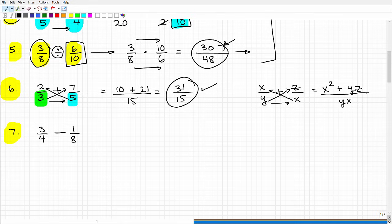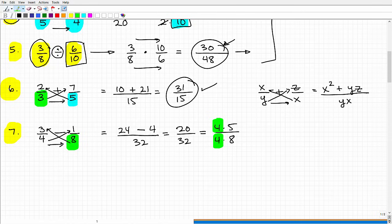Let's do this last problem here. We're using the exact same method. Starting with this bottom number, we go this way. 8 times 3 is 24. Because this is a subtraction problem, we need to use the subtraction operator. So that's 4 times 1, which is 4. That's our numerator. 4 times 8 is 32. So our answer is 20 over 32. We can reduce this. 20 is the same thing as 4 times 5, and 32 is 4 times 8. So I have these common factors which I can cross cancel, and I'm left with my final answer: 5 eighths.